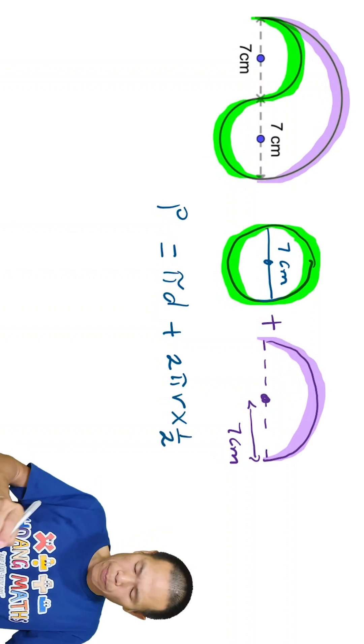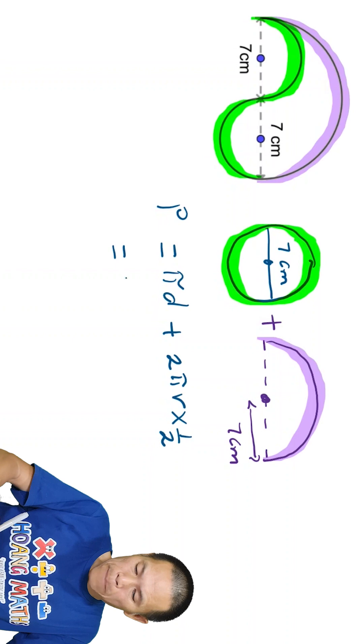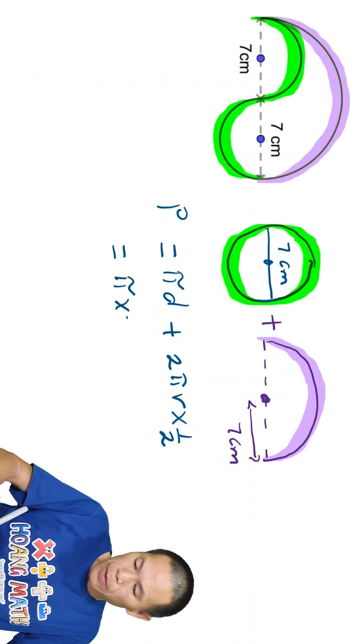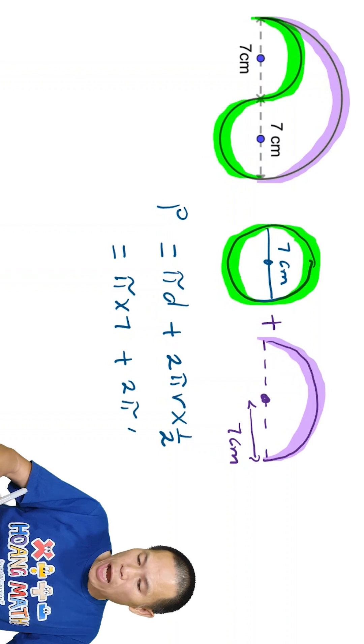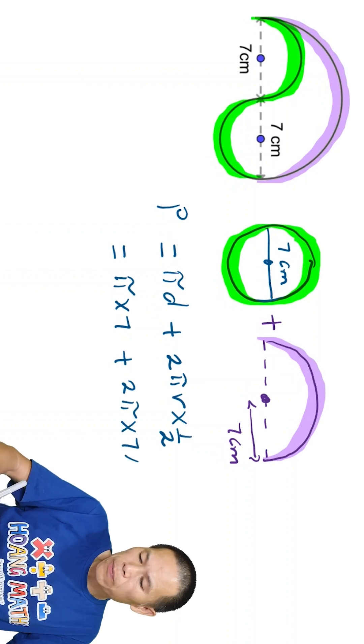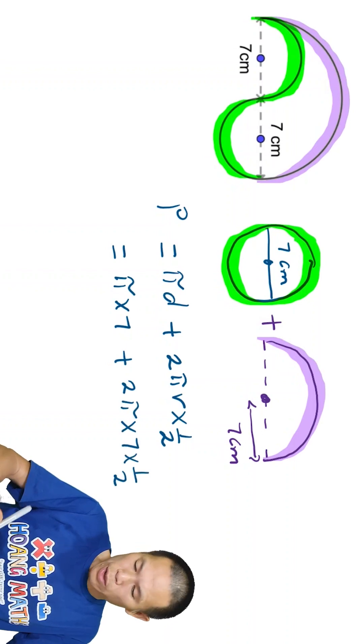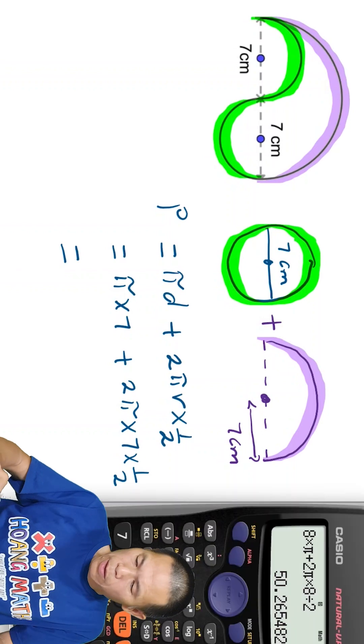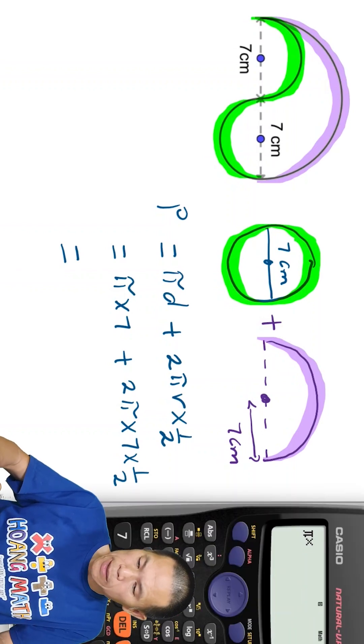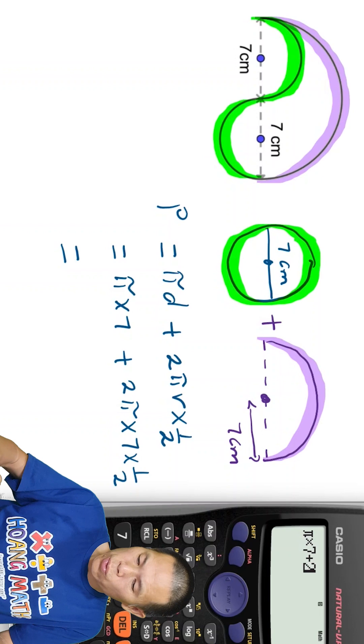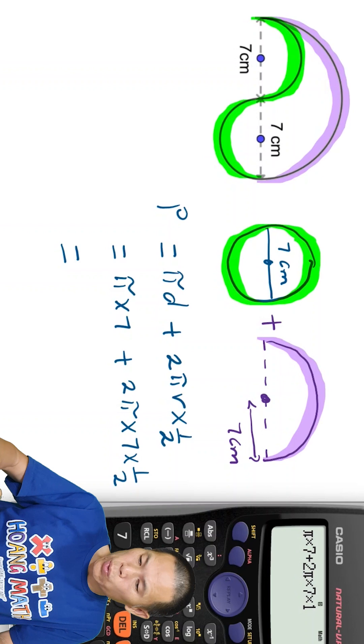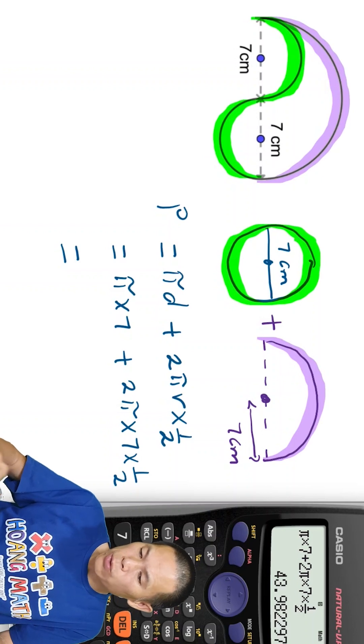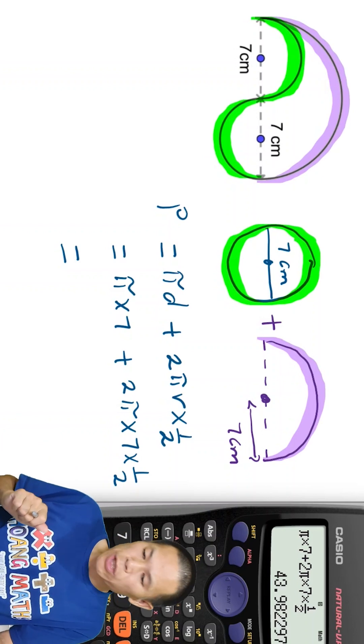So now that becomes π, the diameter is 7. And we add 2π times the radius, that is 7, times 1 over 2. That is π times 7. We add 2 π times 7 times 1 over 2. Or divided by 2, or times 0.5 if you wish.